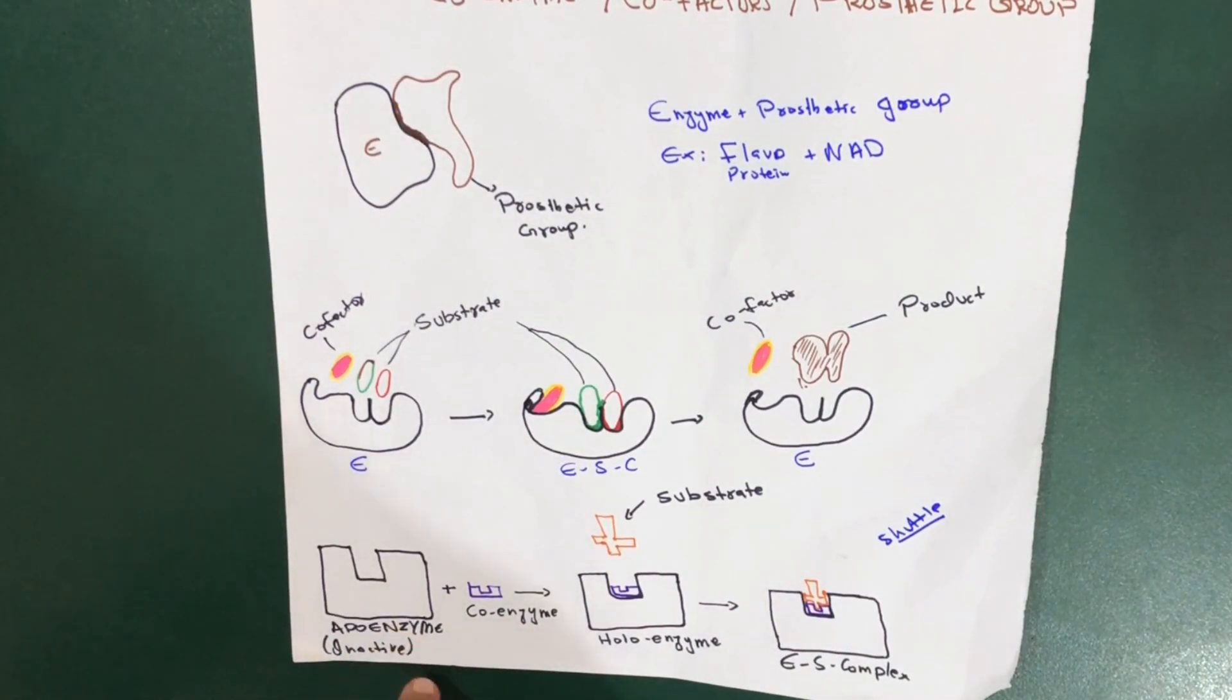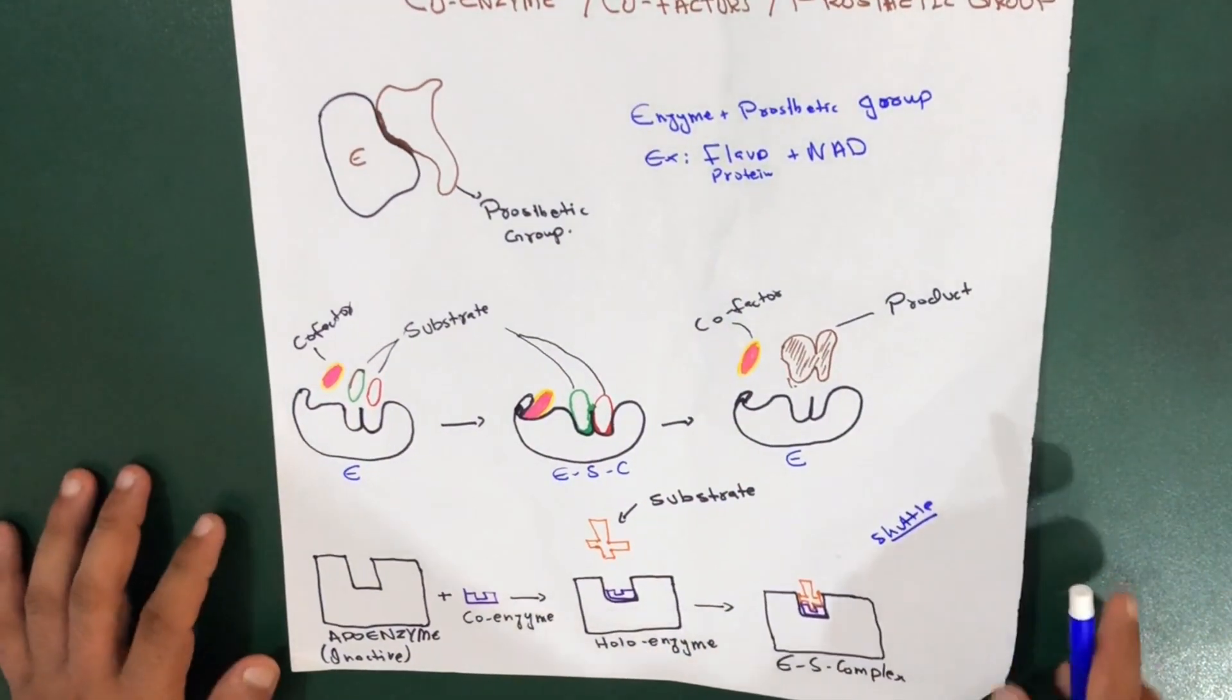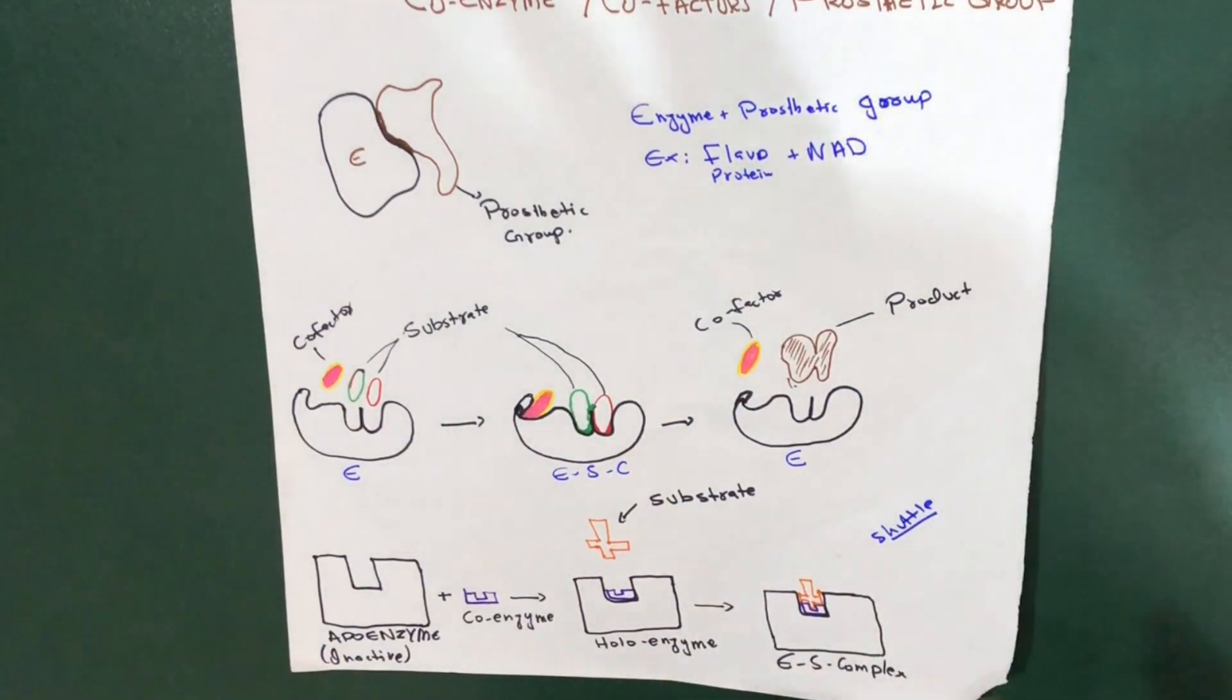This is the apoenzyme without the coenzyme. The coenzyme is going to attach itself, then this becomes holoenzyme and the substrate attaches itself. This is how it helps. In other cases, it works also as a shuttle, which means the transportation of the substrate.